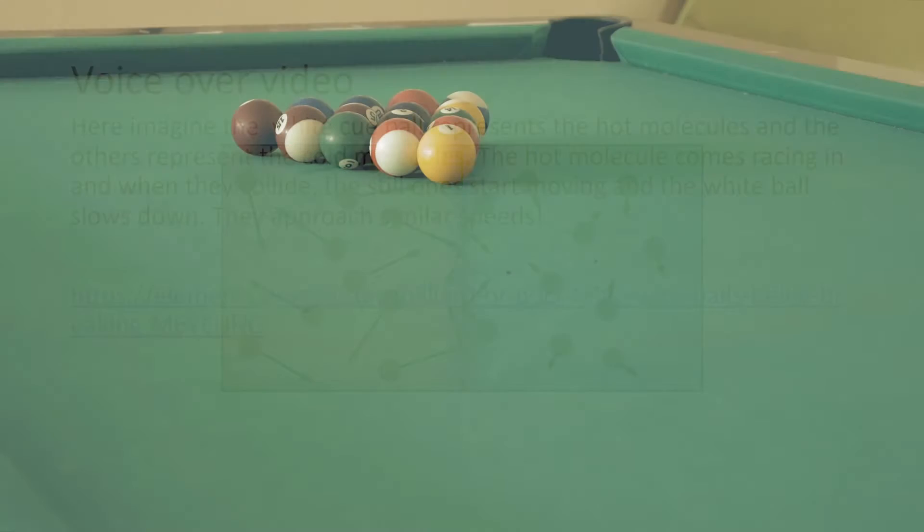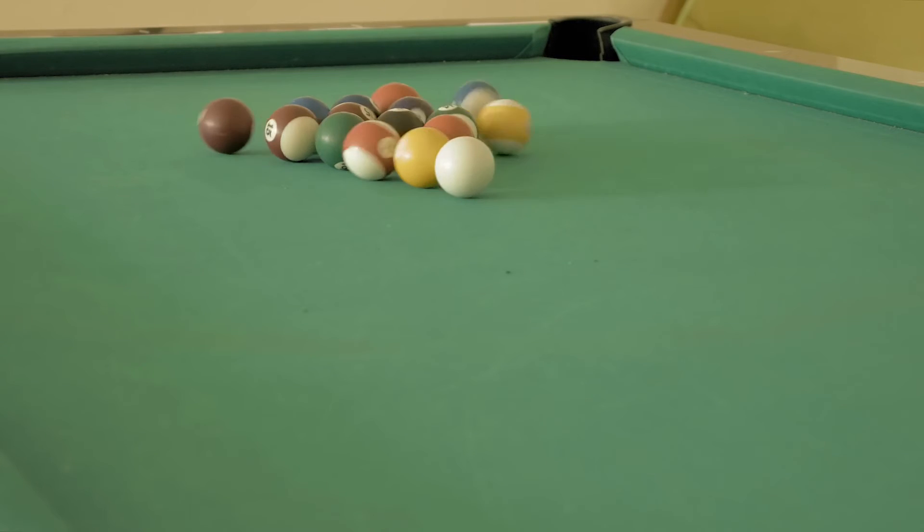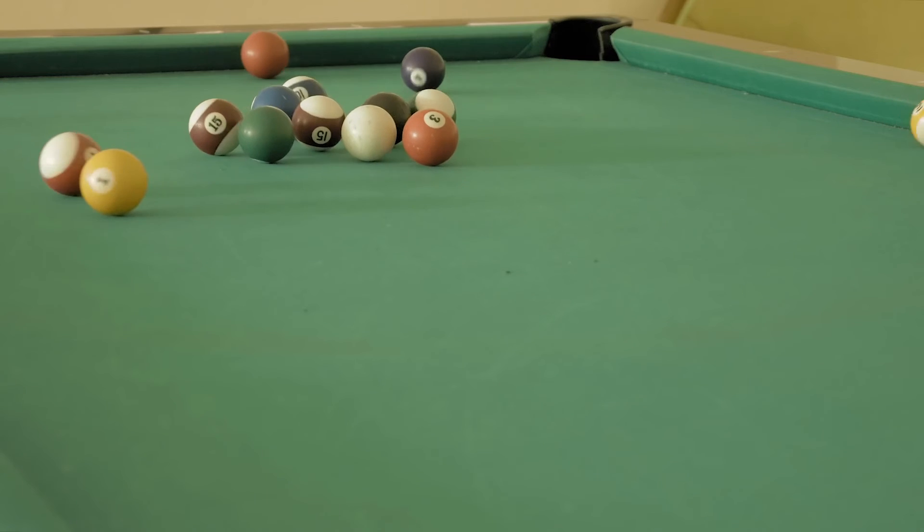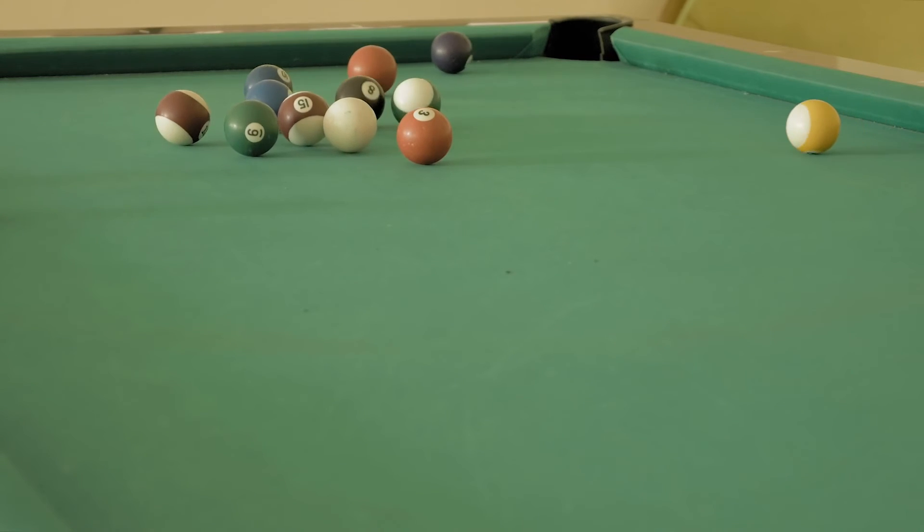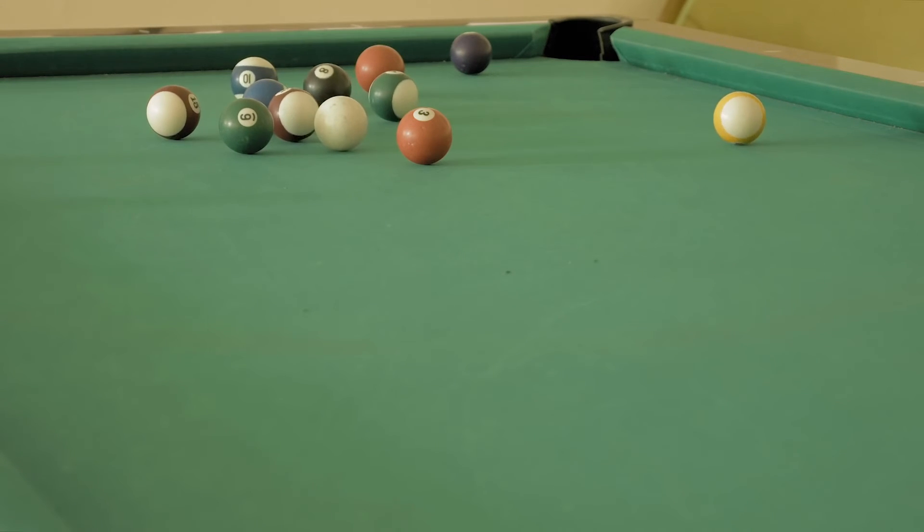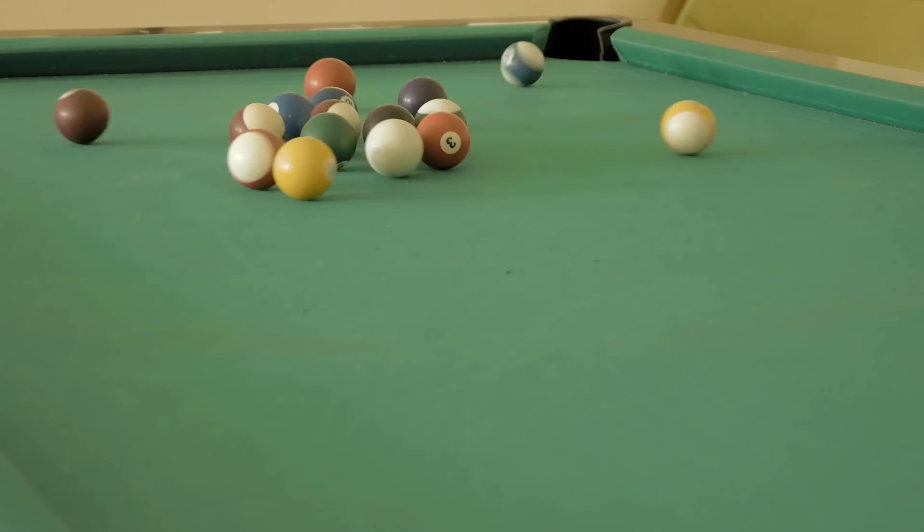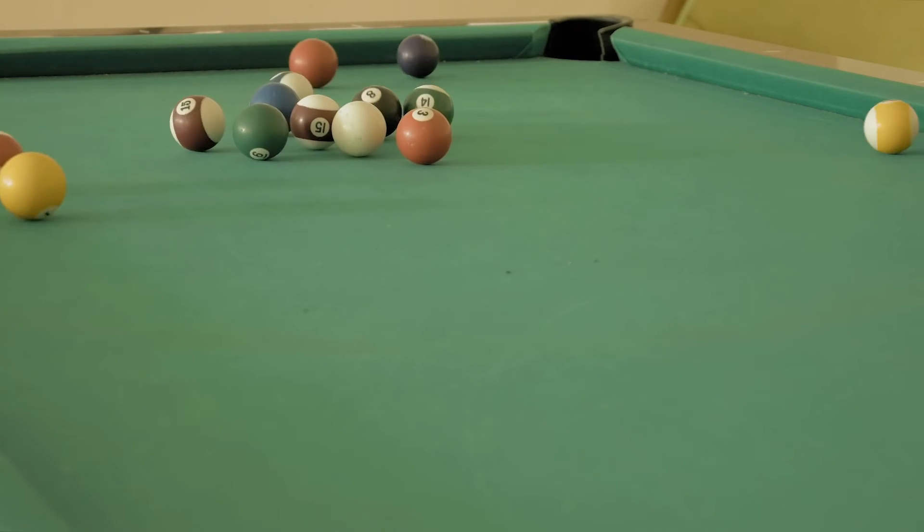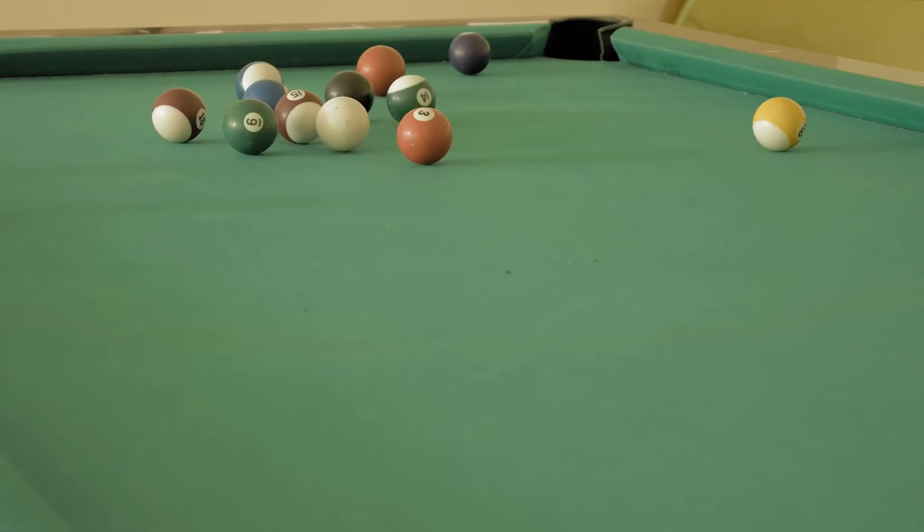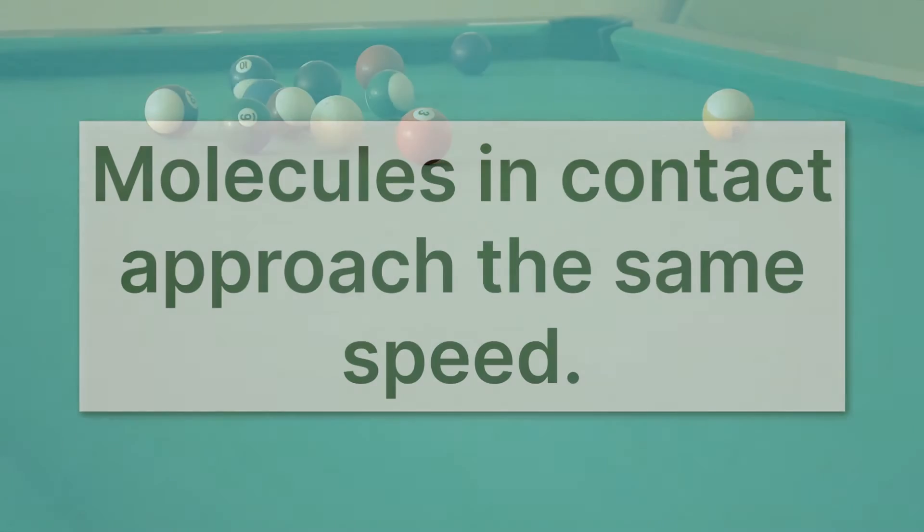Let's look at another analogy. Here, imagine the white cue ball represents the hot molecules, and the others represent the cold molecules sitting still or at least moving slower. The hot molecule comes racing in, and when they collide, the still ones start moving and the white ball slows down. They approach similar speeds. That's what molecules in contact do. Molecules in contact approach the same speed.